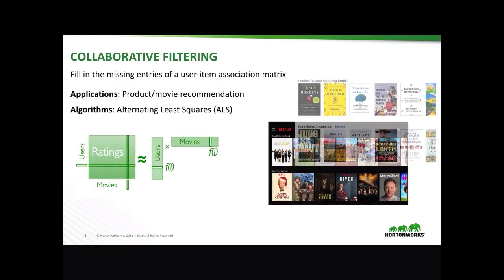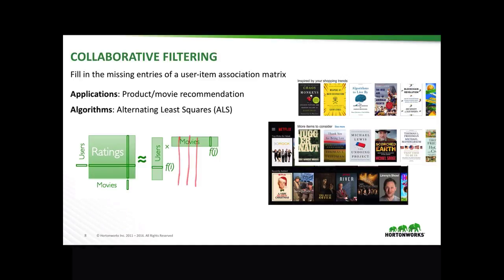Collaborative filtering, or essentially recommender systems, is about filling in the missing entries of a user-item association matrix. Think of Netflix for movie recommendation or Amazon for product recommendation. A popular algorithm for recommender systems is alternating least squares, or ALS for short. For example, say that you have a users-movies matrix with Kevin, Samantha, and Anna — what we want to do is recommend movies for Kevin based on overlap with other similar users such as Samantha and Anna.